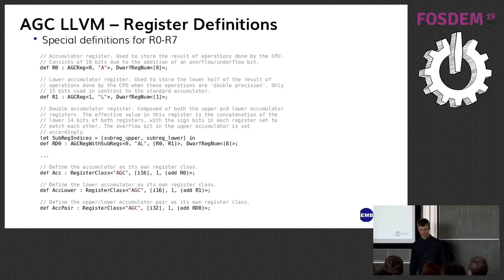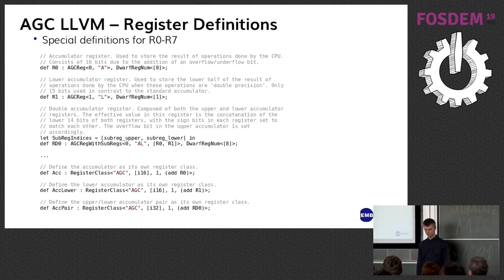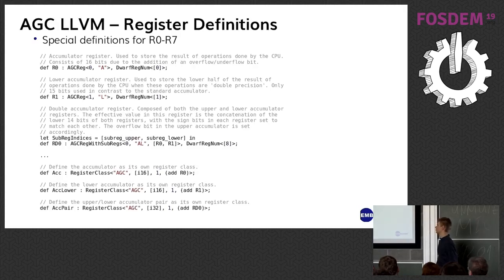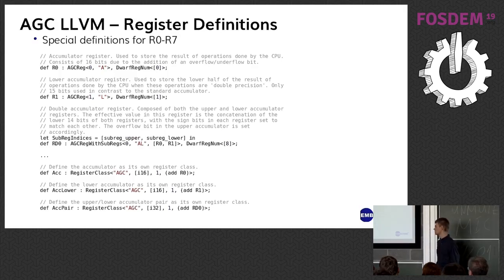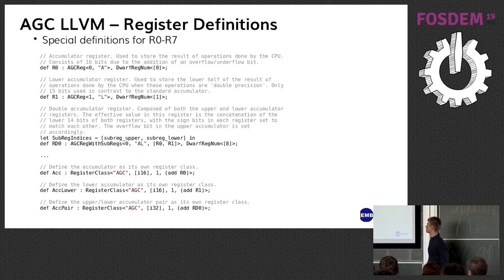Starting with register definitions: I defined R0 to R7 explicitly, because these are internal flip-flops which have special meanings. Double-word registers can also be defined here, like RD0 — they're simply pairs of registers, and each double-word register will overlap with the ones before and after it. Special single register classes are used to specify DAG operands for instructions that use the accumulators or other special-purpose registers. Notice there's a lot of effort in documentation here, but since this was early in the project, it's all downhill from here.